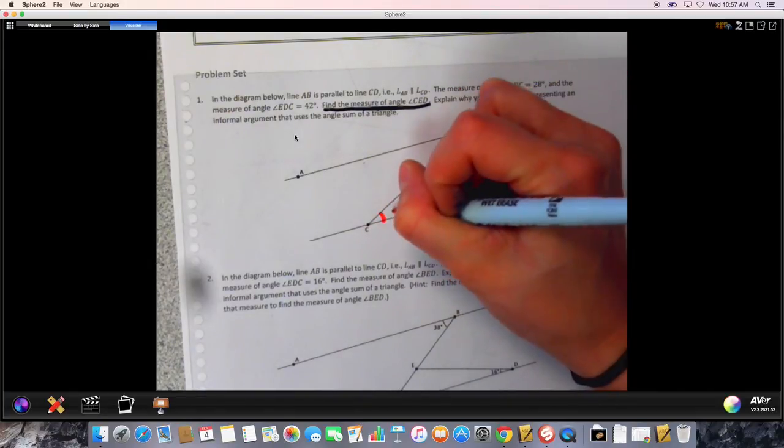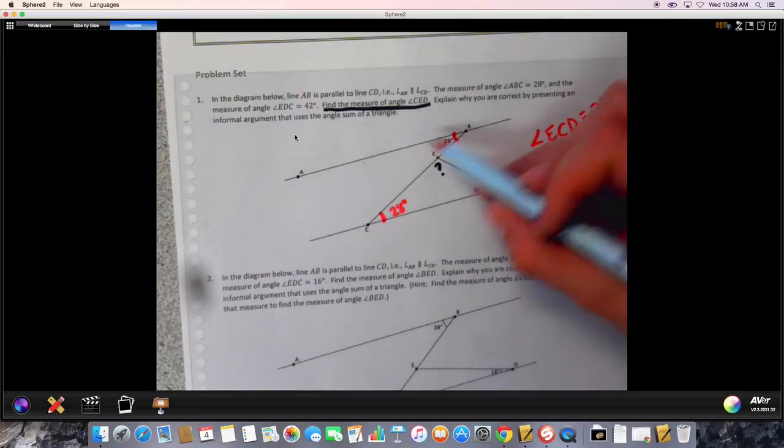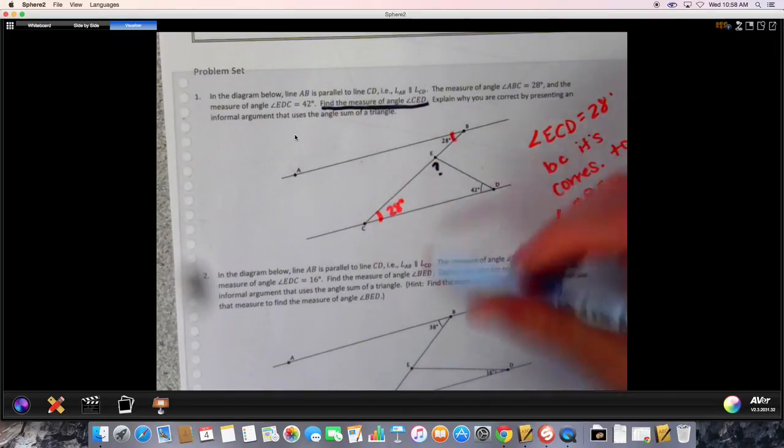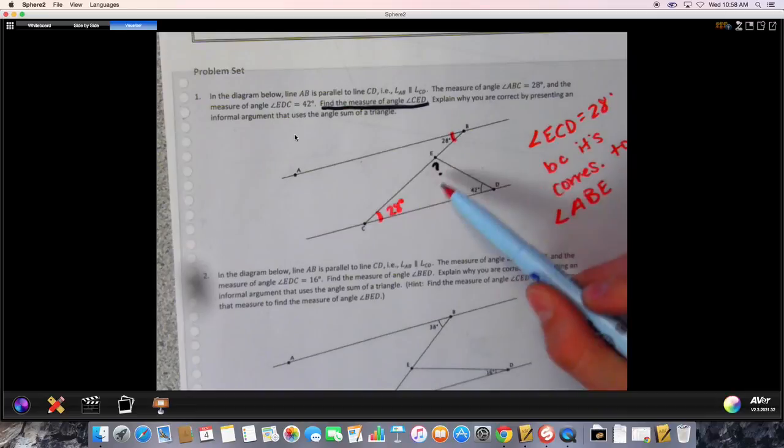If we look at this, we've got two parallel lines and this is our transversal right here, CB. We know that this is 28, we can actually say that this is also 28 degrees, so angle ECD equals 28 degrees because it is a corresponding angle to angle ABE.